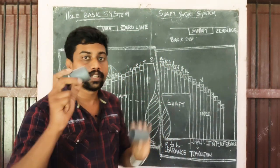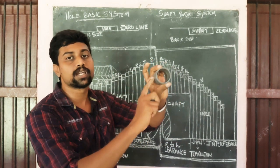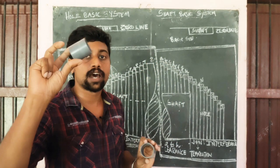The hole basis system has a fixed hole. There is a range of 20mm — there is variation in the hole, or an overall variation in the shaft.